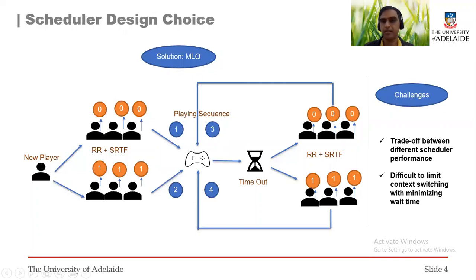As I discussed, we have a few challenges here. There is a trade-off between different scheduler performance metrics. For example, in the round-robin algorithm, if we try to reduce total wait time by reducing time quantum size, we can increase the number of context switches.